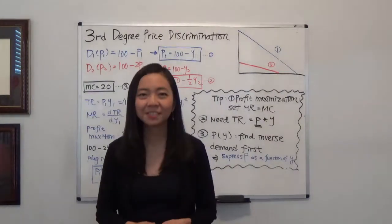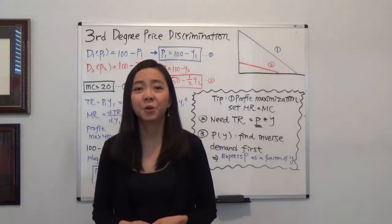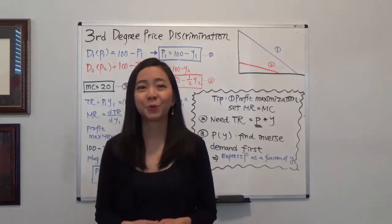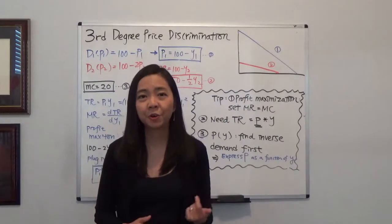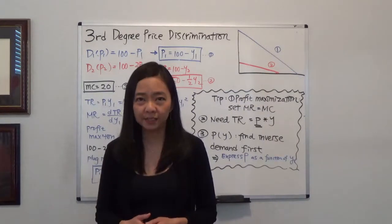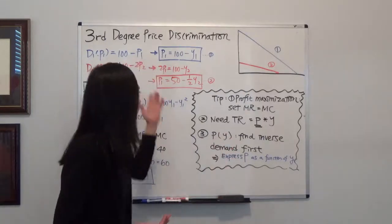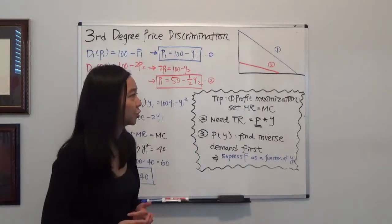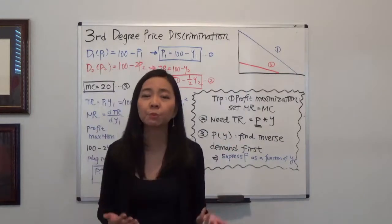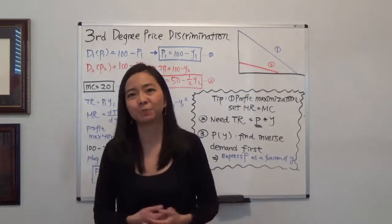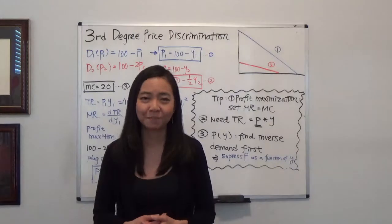Hello everyone, my name is Iris Frans with Jalian Wanru. Today we're going to talk about third degree price discrimination and how a monopoly charges the optimal price and quantity to maximize its profit.